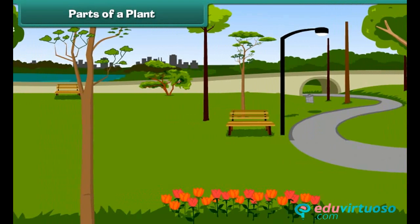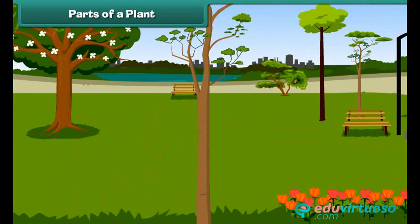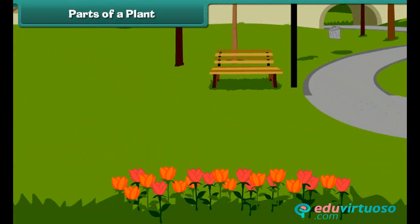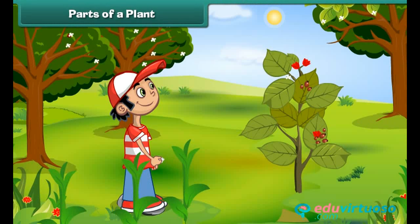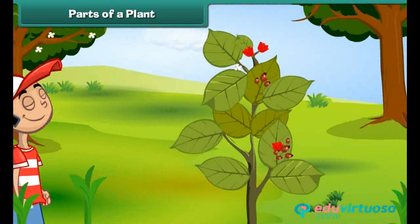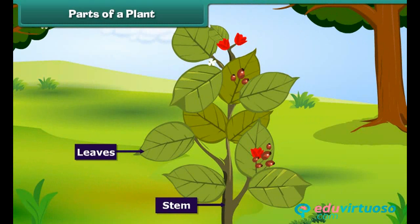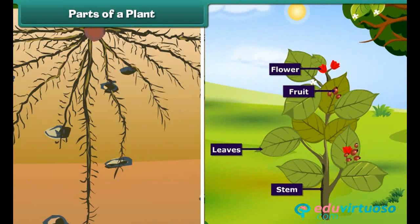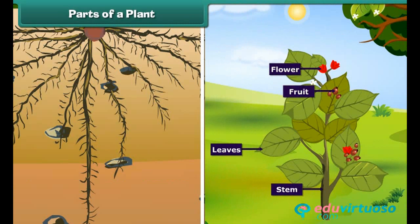As we can see around us, there are a lot of varieties of plants and trees. They are all green in color and provide peace to our eyes. But have you ever observed a plant closely? You can see major parts such as stem, leaves, flowers and fruits above the ground. But do you know that some part is also hidden under the ground? This part is called root.